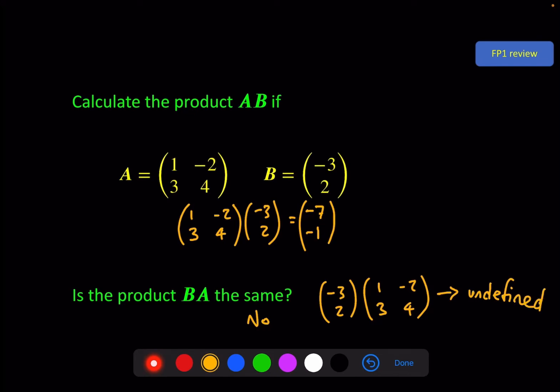An important thing to remember from your previous work is that in general, AB is not the same as BA in matrix multiplication — it is not commutative. We'll come back to that in this video and also see an example where it happens to be equal, but in general it's not.